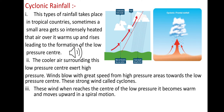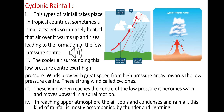When the wind reaches the center, the low pressure air becomes warm and moves upward in a spiral motion. On reaching the upper atmosphere, the air cools and condenses and rain falls. This kind of rainfall is mostly accompanied by thunder and lightning.